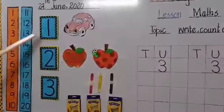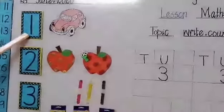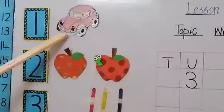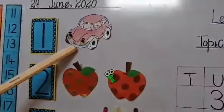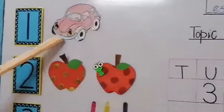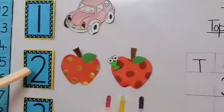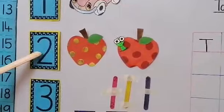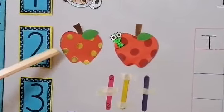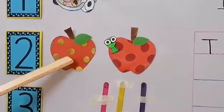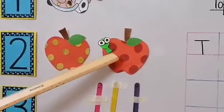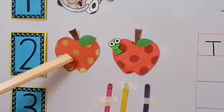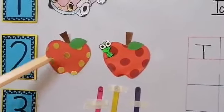Now tell me, which number is this? 1. How many cars are there? 1 car. What comes after 1? 2. How many apples are there? 2 apples. 1, 2. How many apples are there? 2 apples.